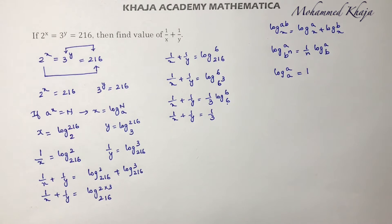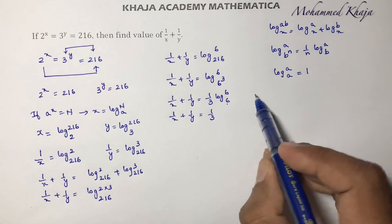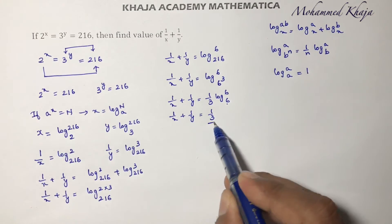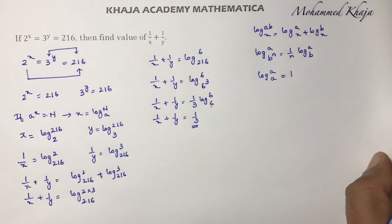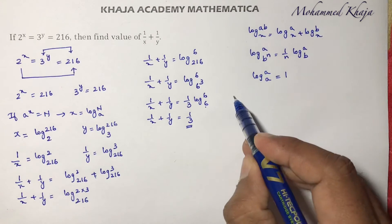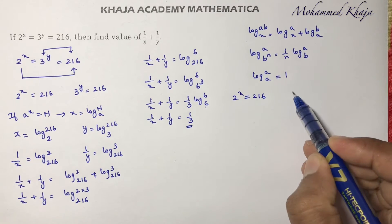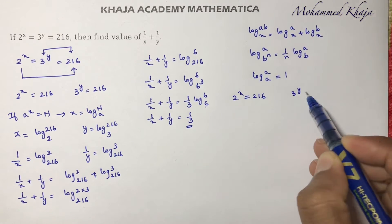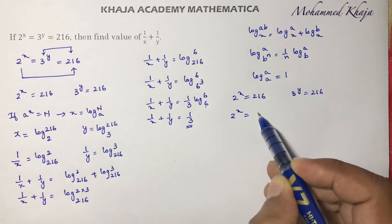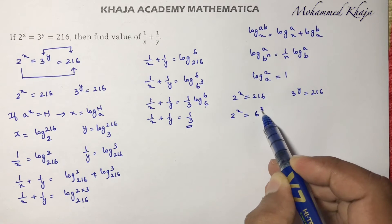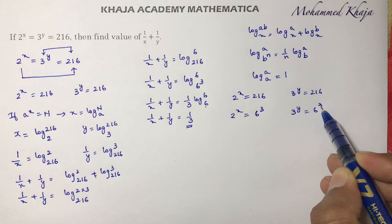The answer is 1 by 3. But this problem can also be solved with another method. Equating the same way: 2 power x equals 216 equals 6 cube, and 3 power y equals 216 equals 6 cube.